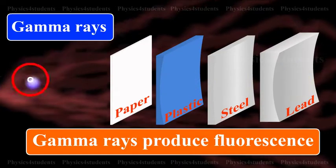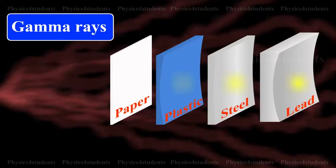They produce fluorescence. They are diffracted by crystals in the same way like X-rays are diffracted.